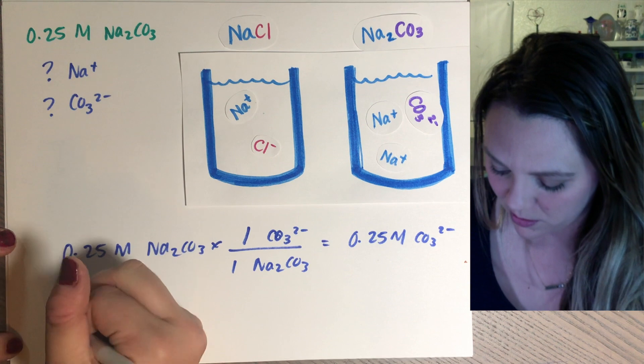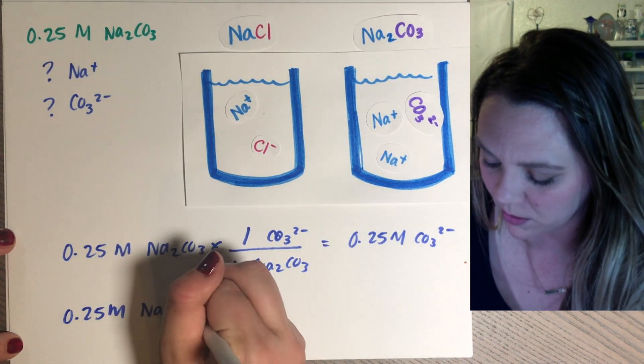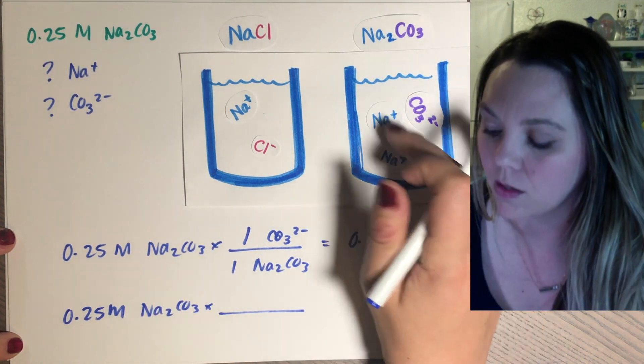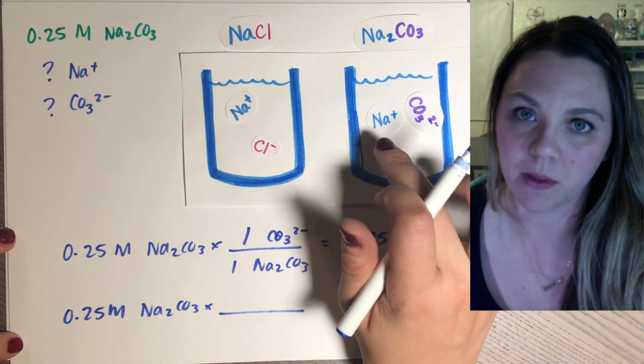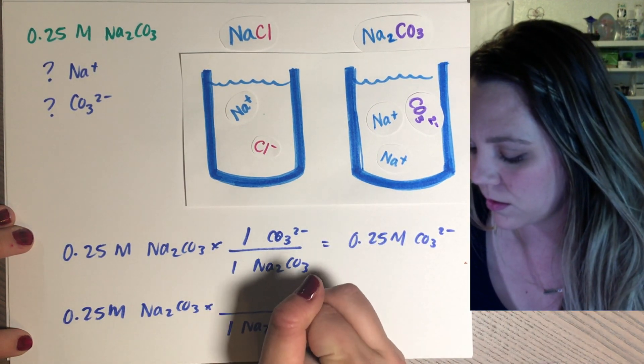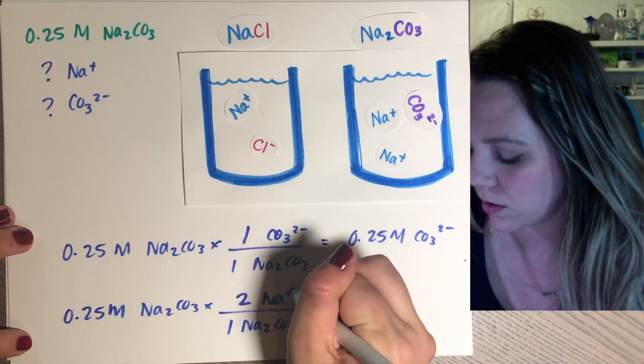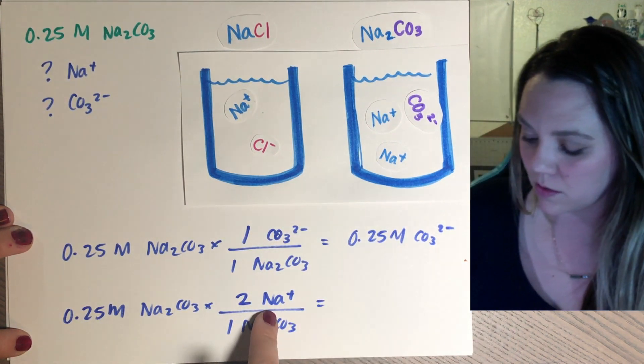However, if I have sodium that I'm trying to calculate for, there's double the amount of sodium up in that solution. Two sodiums. So for every sodium carbonate, there are two sodium ions.